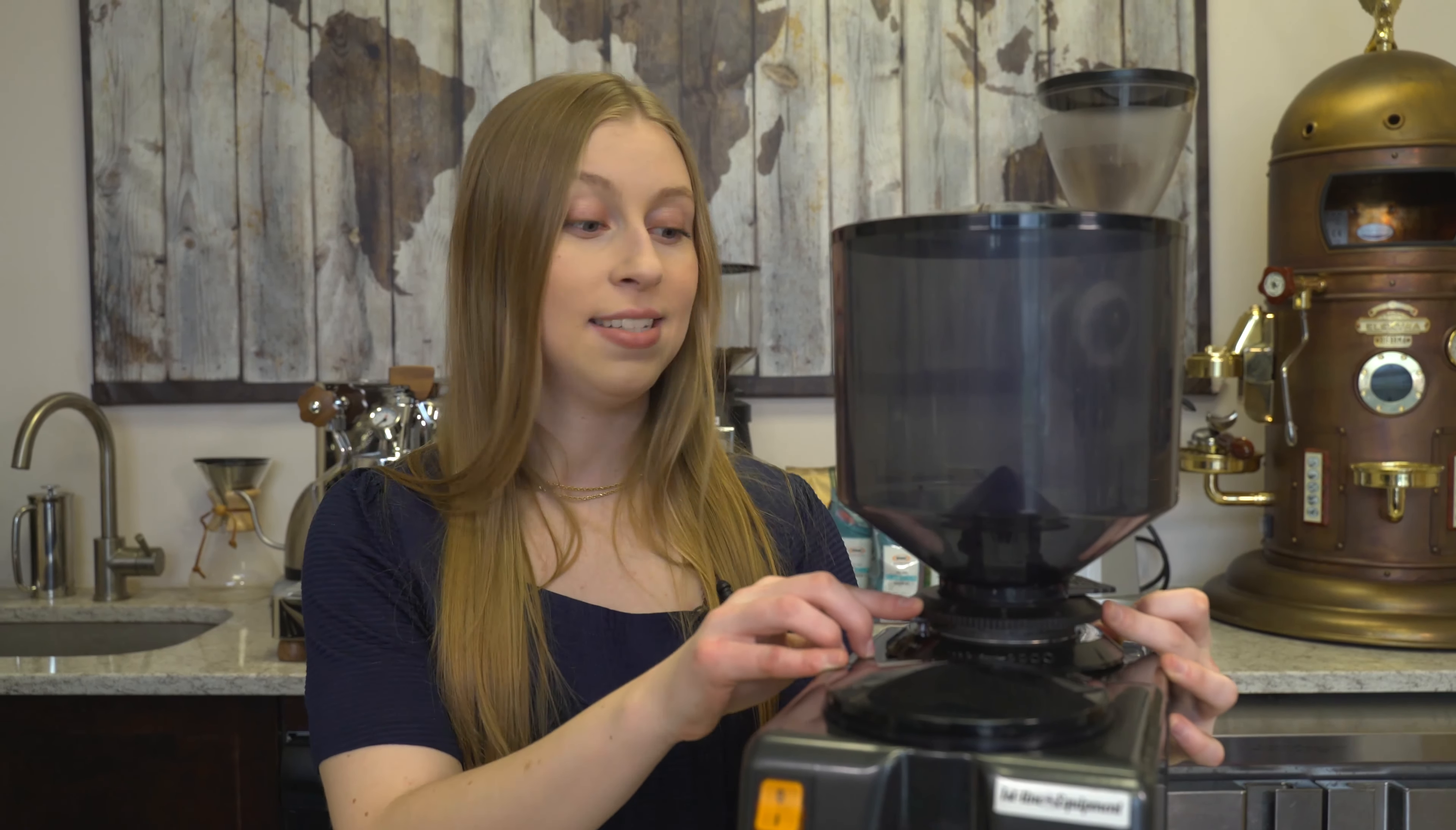In the center of the hopper, you'll see that there's a finger guard to prevent you from sticking your fingers in the burrs while the machine is running. Also, at the bottom of the hopper, there's a stopper, which is a horizontal door that can be pushed in to prevent spillage of the beans, so you can remove the hopper with the beans still in it.